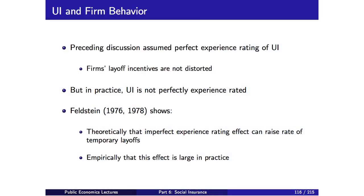We've spent a lot of time talking about unemployment insurance optimal design purely from the worker's perspective. We didn't worry about who was laying you off—the firm—because we implicitly assumed the UI system was perfectly experience rated, meaning every time a firm lays off one more worker, they effectively pay for it and their incentives are undistorted, so you could take firms out of the problem. Now let's turn to thinking about what unemployment insurance does to firm behavior and how we might think about optimal design from the firm's perspective.